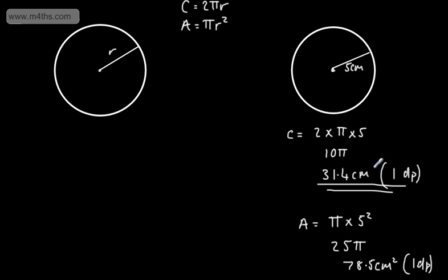We know that the area will always be in units squared. The circumference is a length, so it's just centimetres, or metres, or kilometres. The area is centimetres squared.